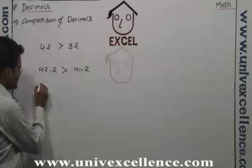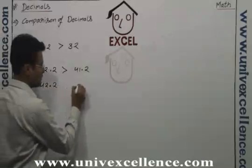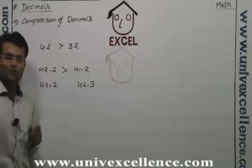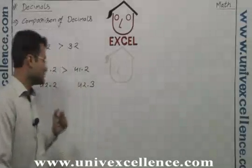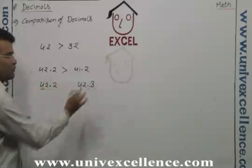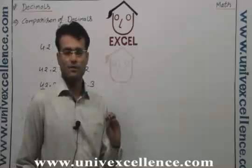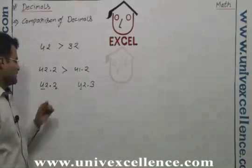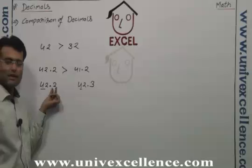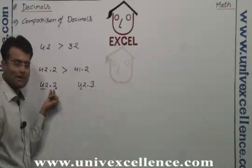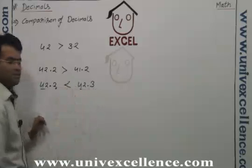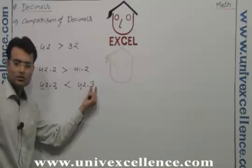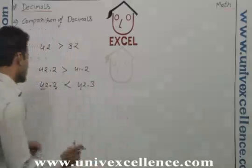But when it goes like 42.2 and 42.3, first check the number before the decimal — these are equal: 42 and 42. We cannot compare with the help of those, so go after the decimal. After the decimal, the first number here is 2 and here is 3. So the larger first decimal digit means this will be the greater number. It's a very easy process.